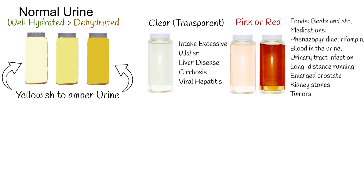Diseases that can cause pink urine include urinary tract infection, long-distance running, enlarged prostate, kidney stones, and tumors in the bladder and kidney. But such cases are rare.